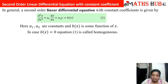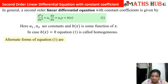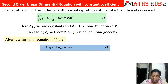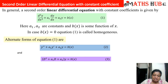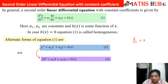When b(x) is non-zero the equation is non-homogeneous; when b(x) = 0 it becomes homogeneous. We can write equation 1 in alternate forms: using prime notation as y″ + a₁y′ + a₂y = b(x); using the operator D (where D means d/dx, D² means d²/dx²) as D²y + a₁Dy + a₂y = b(x); or factoring out y to get (D² + a₁D + a₂)y = b(x). These are all equivalent forms of equation 1.